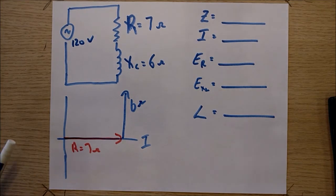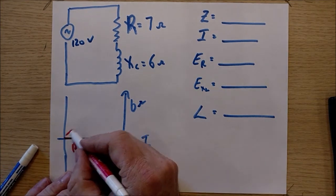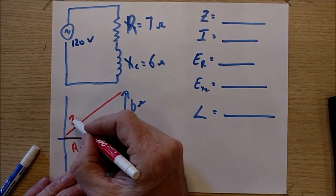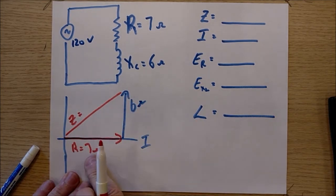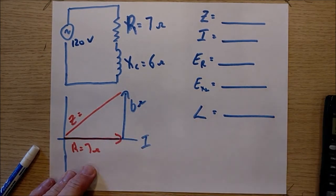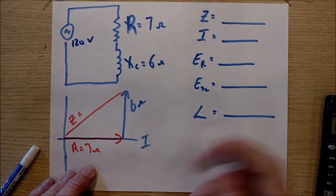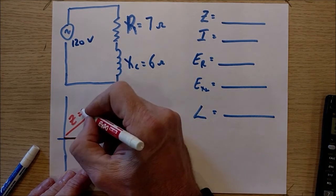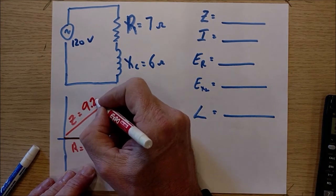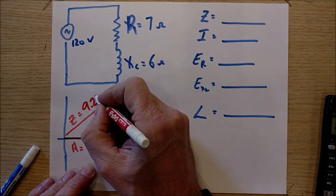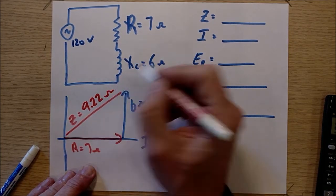The sum of the two is going to be this line right here. And it'll be the impedance in the circuit. It's going to be 7 squared plus 6 squared square root. 7 squared plus 6 squared equals square root. I'm making these calculations off the side here. 9.22 ohms.